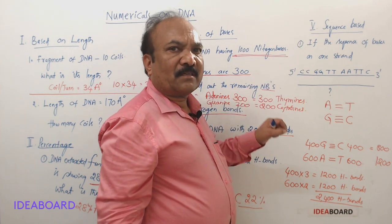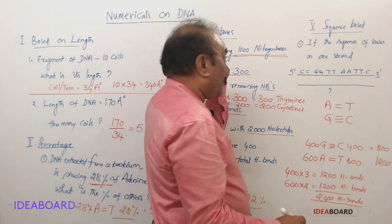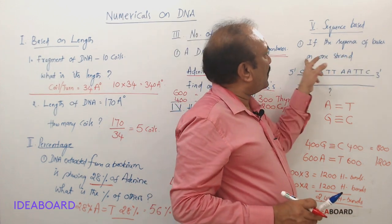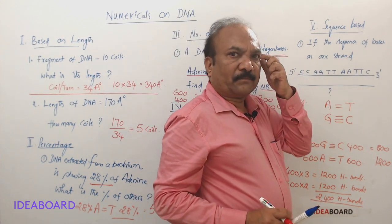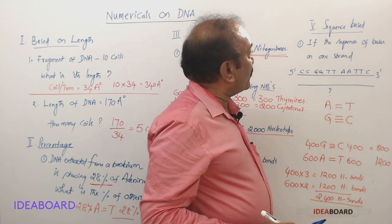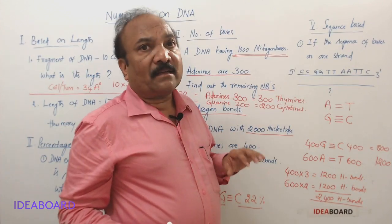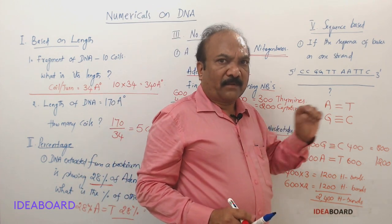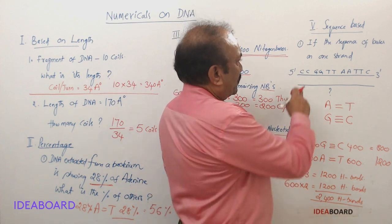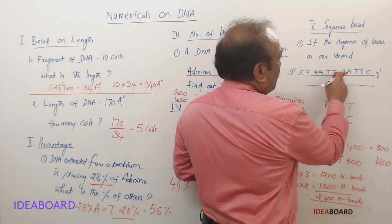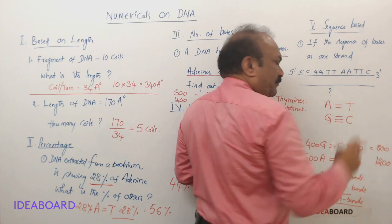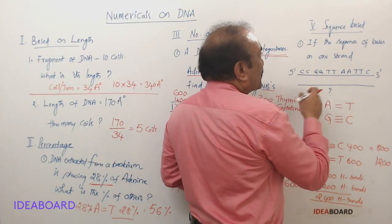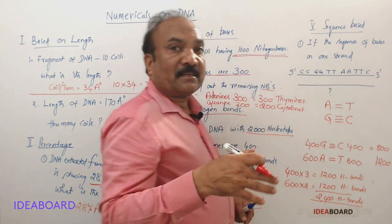Now one more problem which is based on sequence. I will read out the question: if the sequence of bases on one strand—and we know that the sequence of bases on one strand should be read from which direction? Five prime direction to three prime direction. So that's why I am reading out: C-C-G-G-T-T-A-T-T-C. Then they're asking us what will be the sequence you will find in the complementary strand.